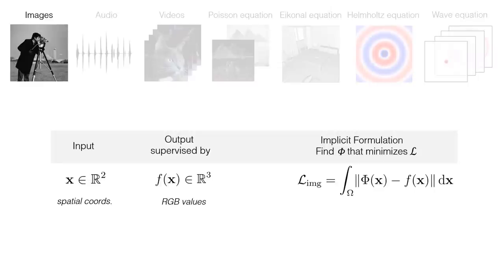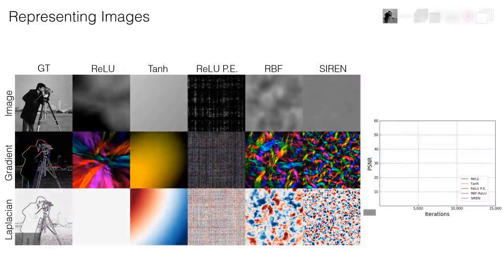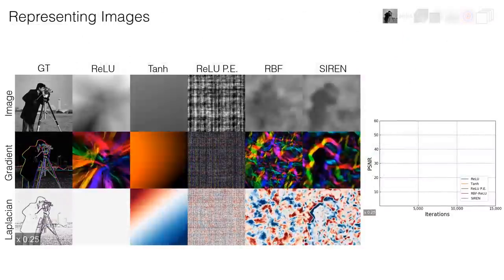Starting with natural signals, we first fit SIREN supervised by an image f defined on pixel coordinates. We seek a function phi that minimizes the discrepancy between the RGB or grayscale values of the image, and the output of the network phi for each pixel.